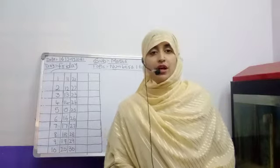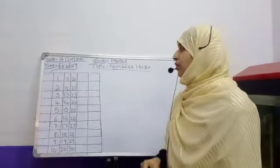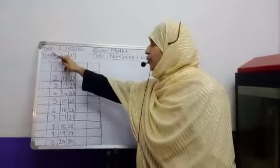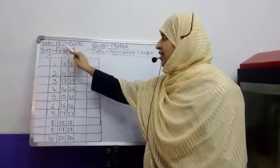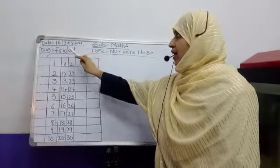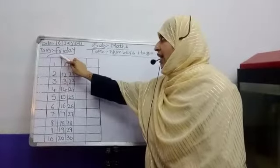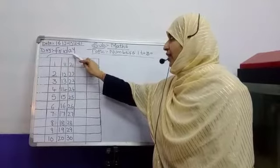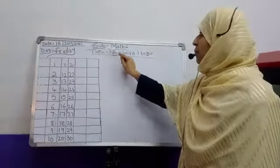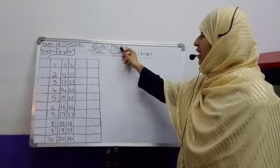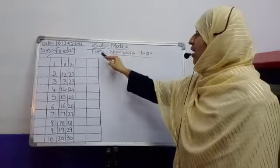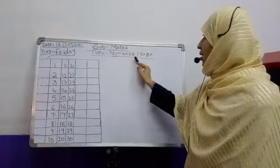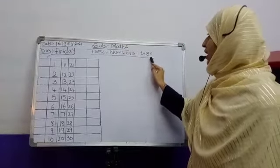Now, today is your subject, Maths. All of you get the board. First, you should write in your notebook. Day: 16 July 2021. Day is Friday, F-R-I-B-A-Y. Subject: Maths, M-A-T-H-S. Topic: Numbers 1 to 30.